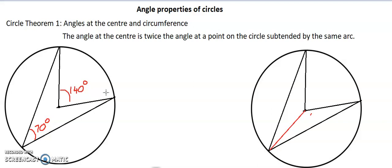One thing we know about this property is that the angle at the center is twice the angle at a point of the circle. So we know if this angle here is 70 degrees, then this angle here is going to be 140 degrees.